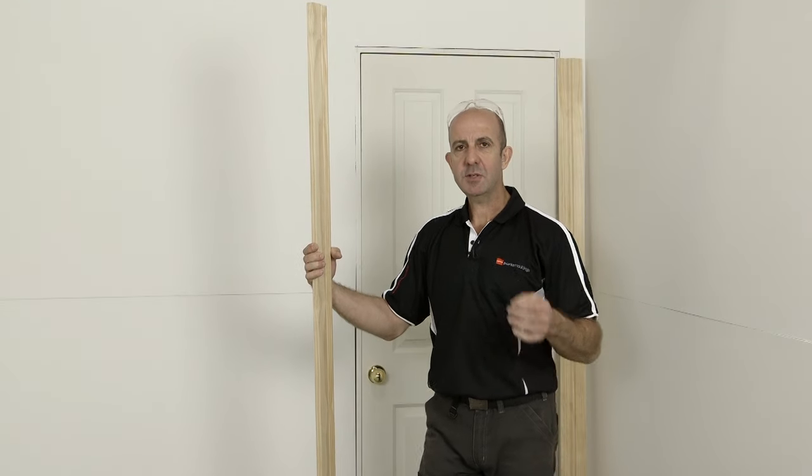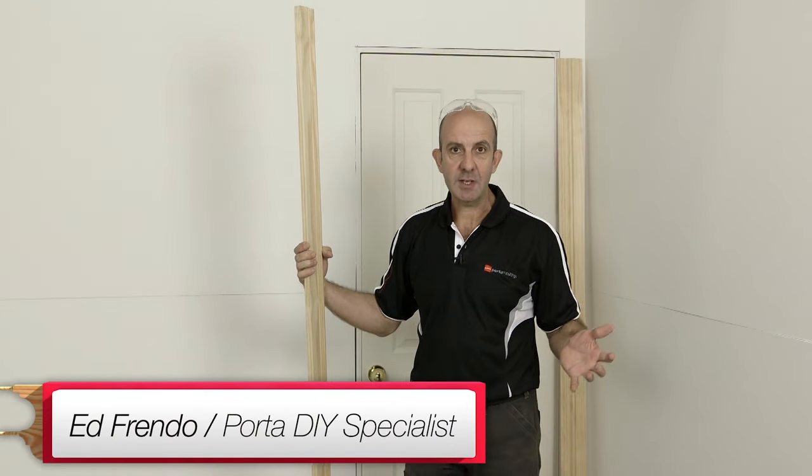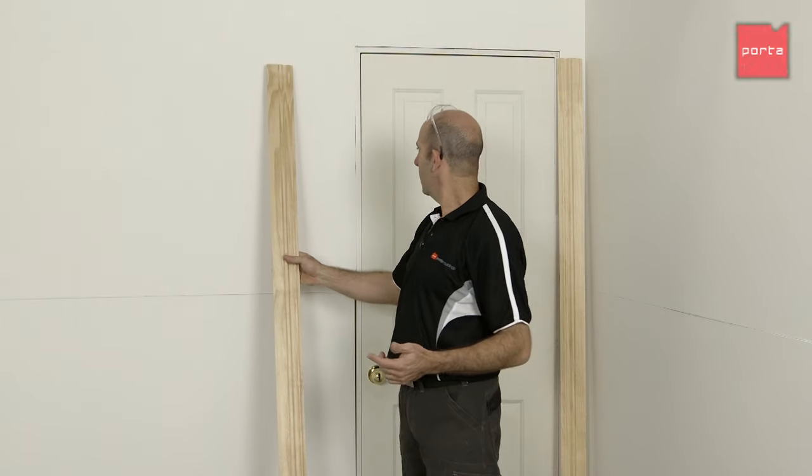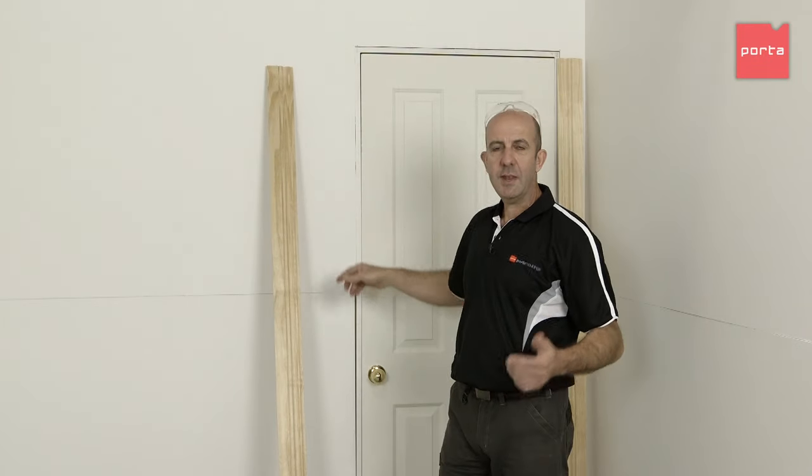Before we get started with our architraves, I'll just explain to you what an architrave actually is. Essentially, it's a decorative molding used to cover the gap between the lining board and the door jamb, or the lining board and the window frame.